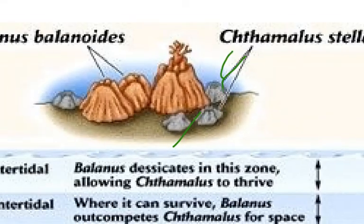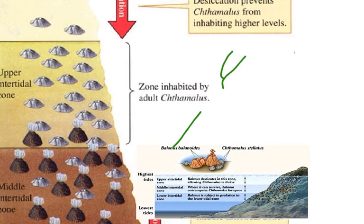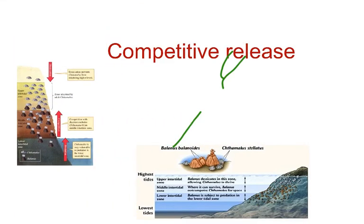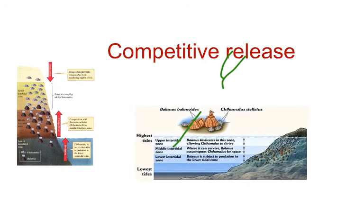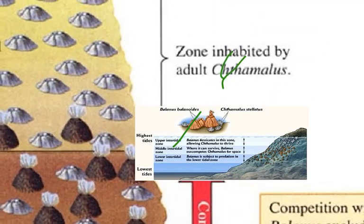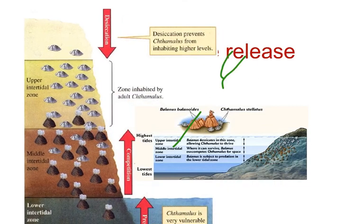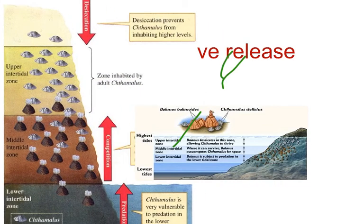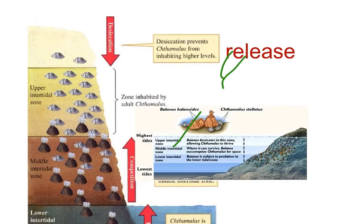The smaller one is called Chthamalus. As you can see, the white ones are Chthamalus and the bigger one is Balanus. Connell's field experiment shows that on the rocky sea coast of Scotland, the larger and competitively superior barnacle Balanus dominates the intertidal area and excludes the smaller barnacle Chthamalus from that zone. When the dominant one is experimentally removed, the population of the smaller one came to increase. In general, herbivores and plants appear to be more adversely affected by competition than carnivores. This is all about competitive release.